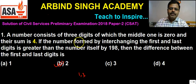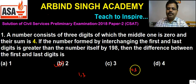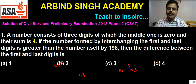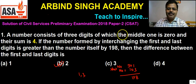The answer is 2. To justify and confirm: the number would be 103, since the middle digit is 0. After reversing, the new number will be 301. The difference would be 301 minus 103, which equals 198. This satisfies all the given conditions, confirming the answer.